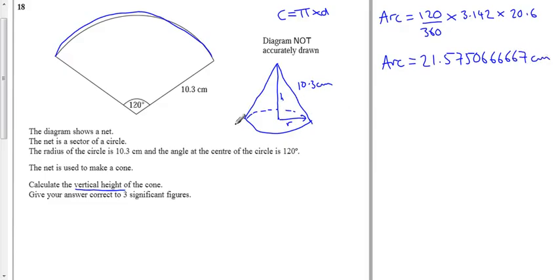But we also know from the cone that the circumference of the cone, which must be that answer, must be equal to pi times the diameter. So if we divide this answer by pi, divide it by 3.142, that gives us the diameter is equal to 6.866666 and the 6s keep on going.